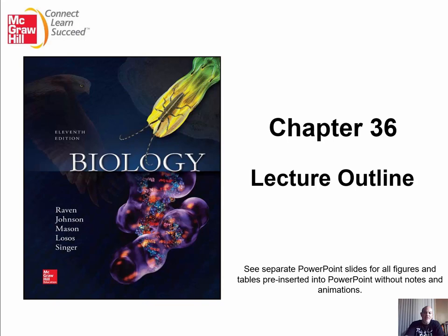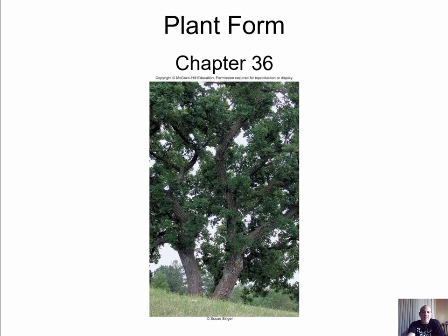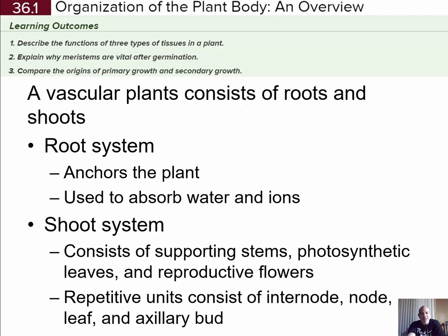This is chapter 36, which deals with plant form — basically the structure of plants with some basic physiology, in the 11th edition. The emphasis of this chapter is really going to be with the tracheophytes or the vascular plants that we've seen in the laboratory. Most of the examples are also going to come from the flowering plants — the angiosperms — as they are the more dominant plants today.